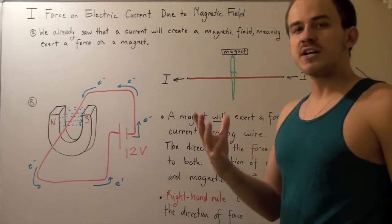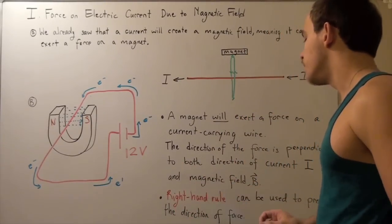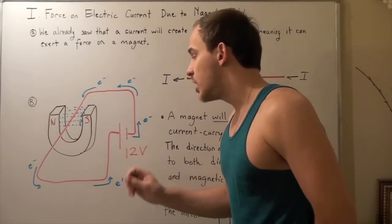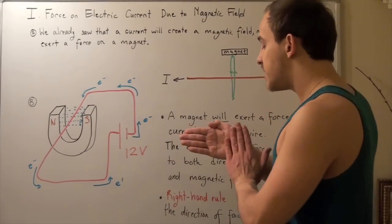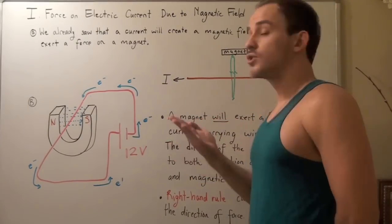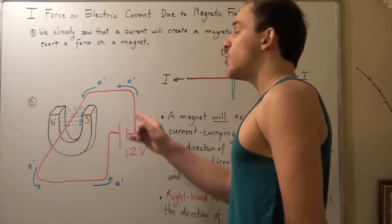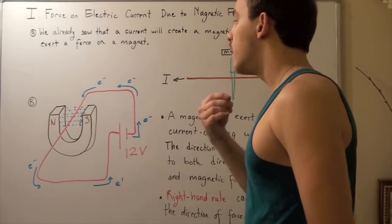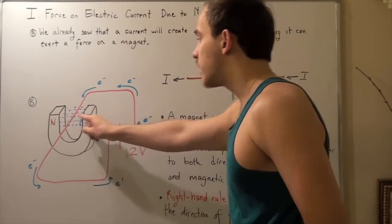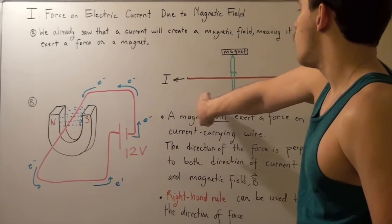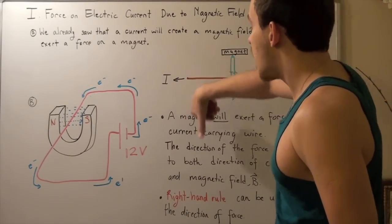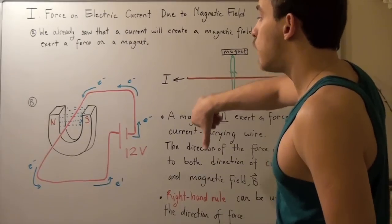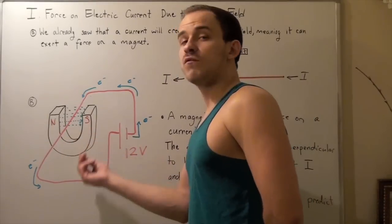To find the direction of the force, we use another version of the right-hand rule. We take our hand and point it in the direction of our electric current — which is going into the board. Then we curl our hand in the direction of the magnetic field. Since the magnetic field is going this way, we twist our hand accordingly, extend our thumb, and the thumb points in the direction of our force. In this case, our force points downward.